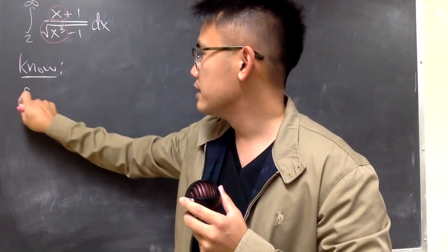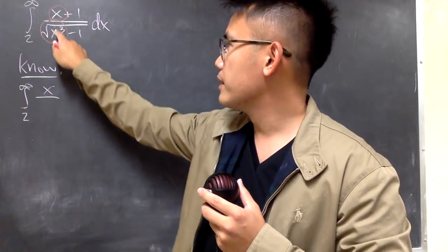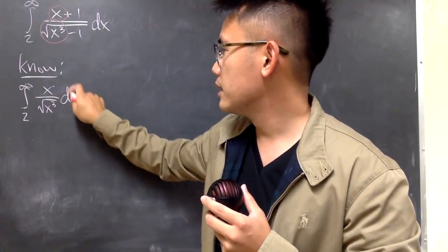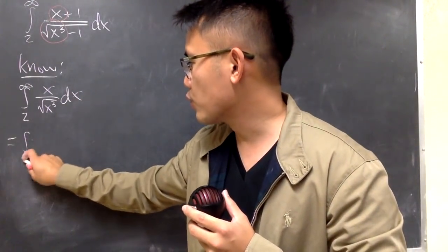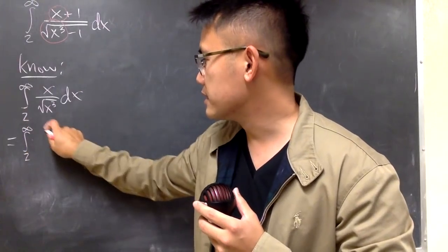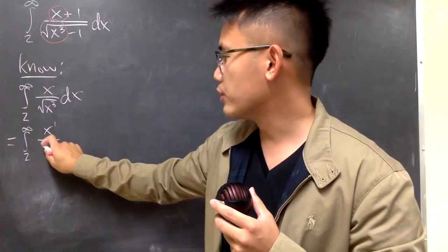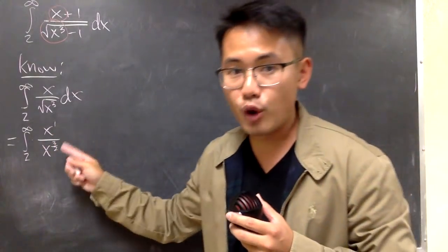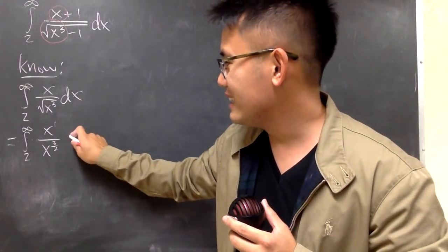I'm going to work this out. This is 2 to infinity, x over square root of x cubed dx. Let's simplify this. We know that this is the same as the integral from 2 to infinity, x to the first power over x to the 3 over 2 power, 3 over the index 2, like this, dx.